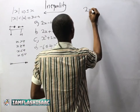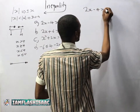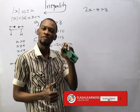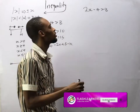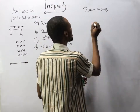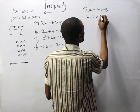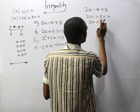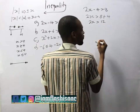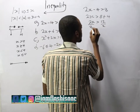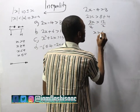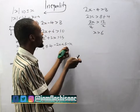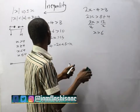The first question says 2s minus 4 is greater than 8. Remember we solve it the same way we solve equations. Collecting like terms: 2s is greater than 8 plus 4, so 2s is greater than 12. Dividing both sides by 2, s is greater than 6. We didn't divide any part by a negative number so no sign changes.